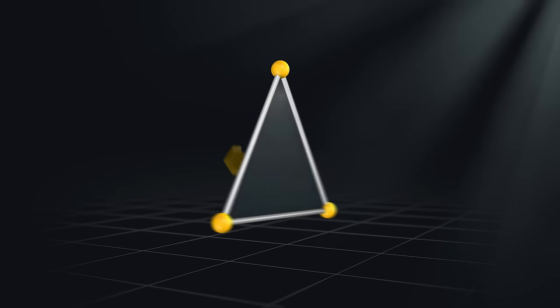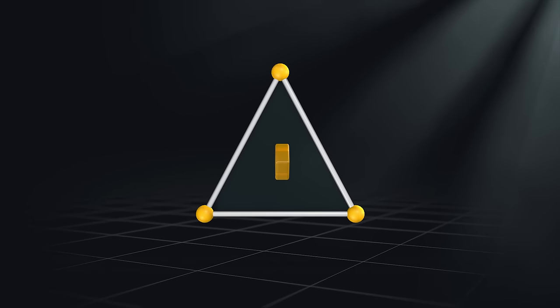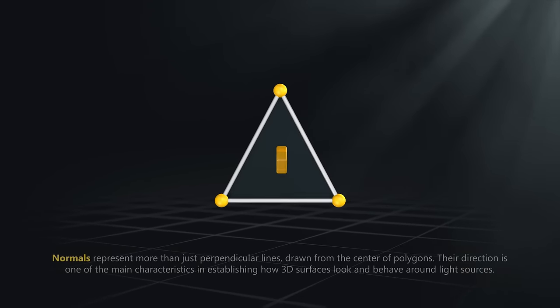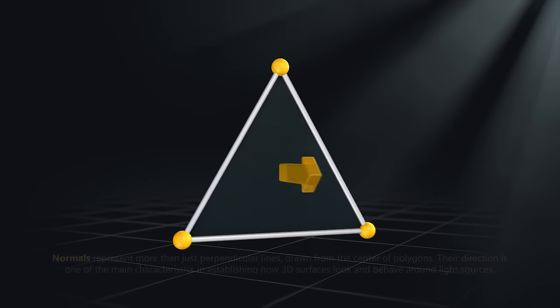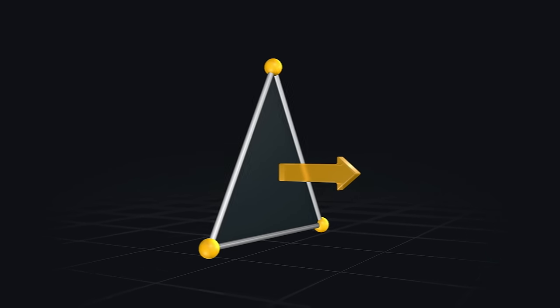All polygons have a special property called a normal, which represents the direction they're facing. This allows the computer to calculate how light bounces off the polygon's face and in what direction. Normals also help the computer calculate the shading of an object.